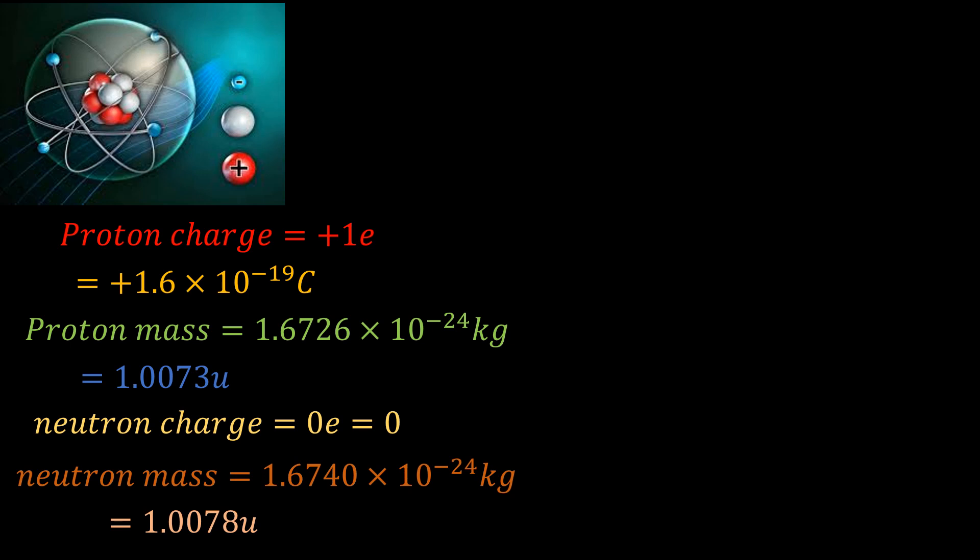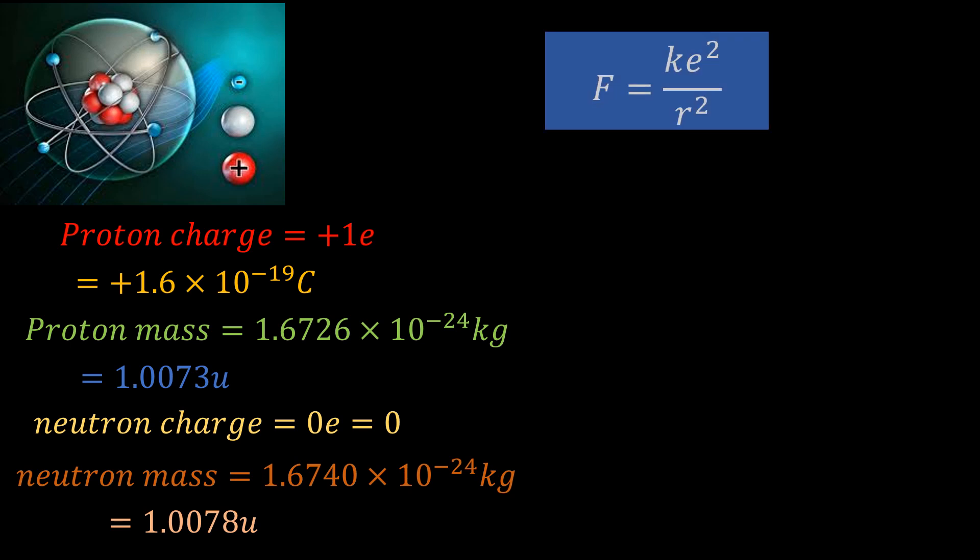Electrons, on the other hand, are found outside the nucleus. According to the Rutherford model of the atom, these electrons orbit the nucleus in a circular path with the centripetal force provided by the electrostatic attraction between the nucleus, which is positively charged, and the electron, which is negatively charged. The electron has a negative charge of one electronic charge, which is equal to 1.6 × 10^-19 coulombs, same as the proton, but this value is positive for the proton.